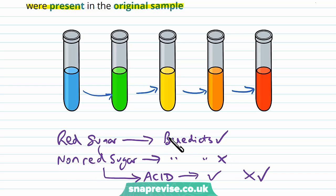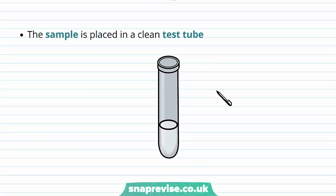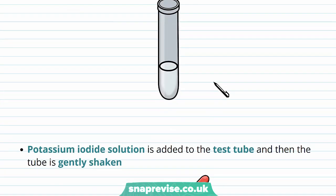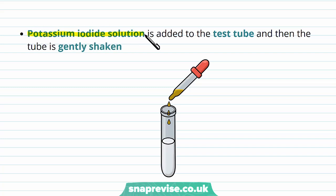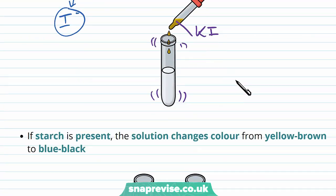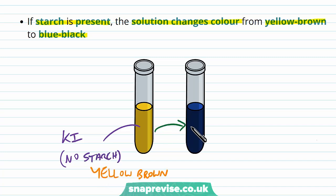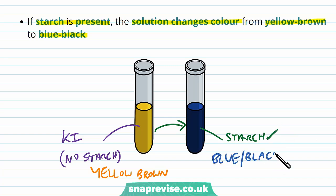Another carbohydrate we can test for is starch, using the iodine test. We place our sample in a clean test tube, then add iodine in the form of potassium iodide solution, which provides the iodide ions needed for the test. We then gently shake the tube. If starch is present, the solution changes colour from a yellowy-brown colour to a blue-black colour — a quite clear and obvious colour change indicating the presence of starch.